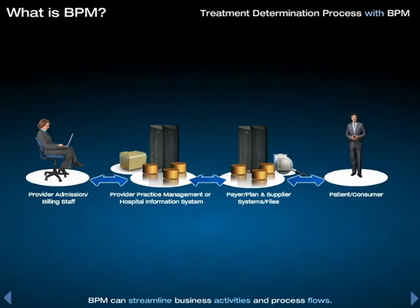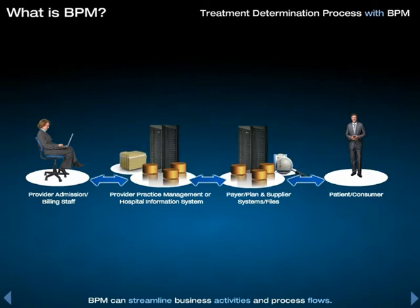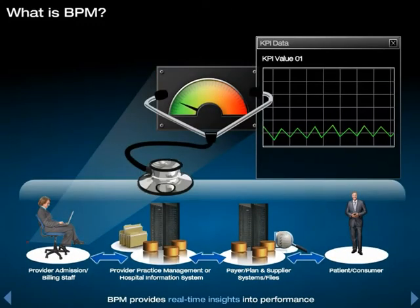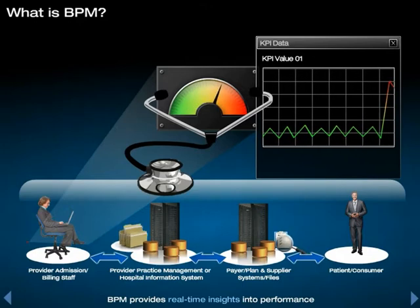In this simplified illustration, the treatment decision process has been modeled and then implemented using BPM. The human figure on the left represents the healthcare provider and/or practice administrator using a personalized dashboard for monitoring and modifying the process in production. The system and file icons on the left represent the provider's practice management or hospital information system, including an electronic medical record application and electronic transaction features. The system and file icons on the right represent the payer, health plan, and supplier systems. The human figure on the right represents the payer, health plan, or supplier customer service representative or claims reviewer. All process components — IT, content, and human — are interconnected, as represented by the blue arrow. BPM provides treatment decision process visibility by enabling the monitoring of real-time key performance indicators, or KPIs.